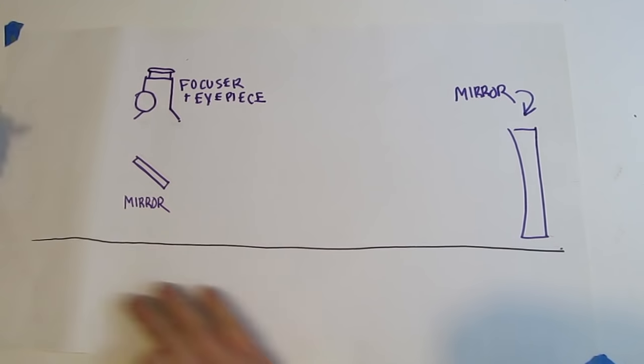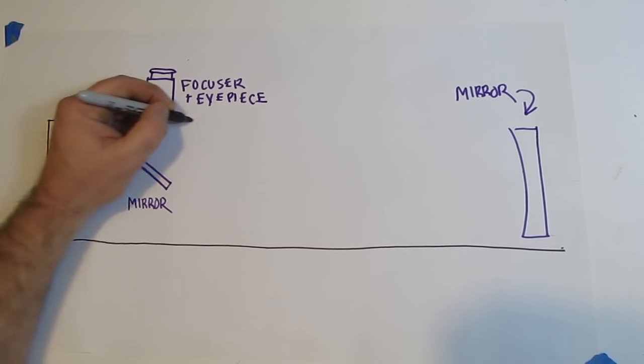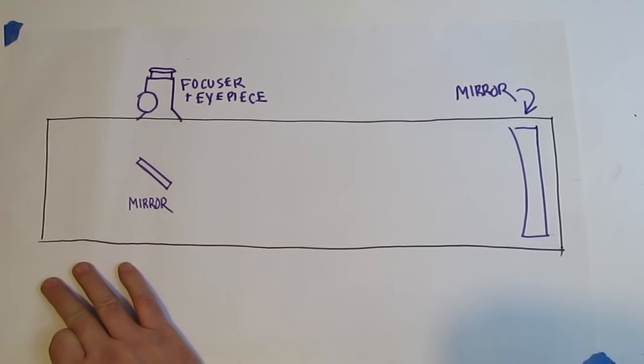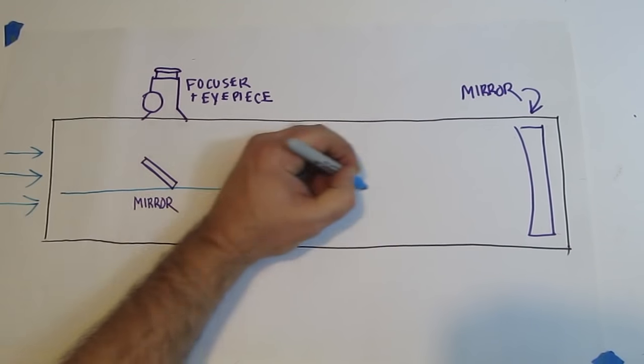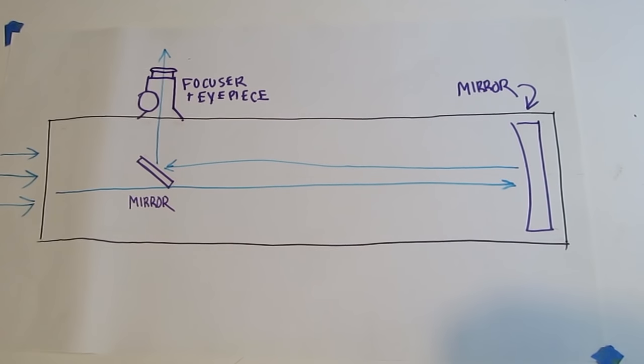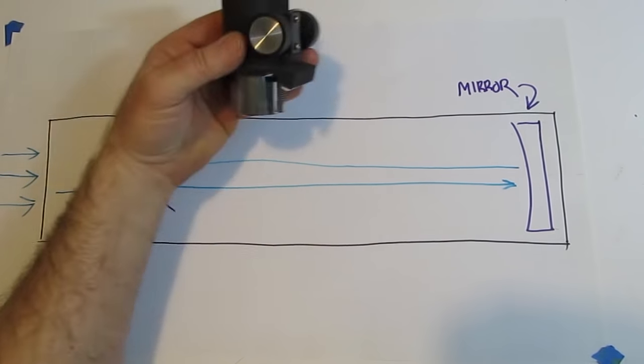This is what happens with the telescope. The light comes in, bounces off our primary mirror, off our secondary, and out the eyepiece so we can focus it and see the image. And here's the parts we have.